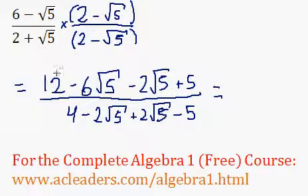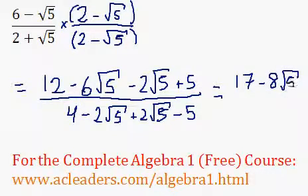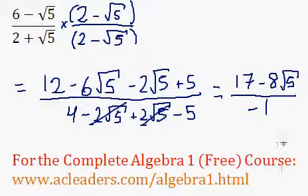Okay, so up top we have 12 plus 5, 17. Negative 6 root 5 minus 2 root 5. Negative 6 minus 2. Negative 8 root 5. Now, negative 2 root 5 plus 2 root 5, they cancel out. And 4 divided by negative 5 is just negative 1. Great. Look at that. Negative 1 down at the bottom.